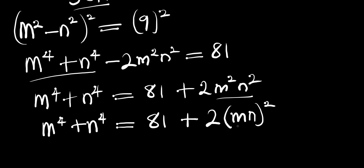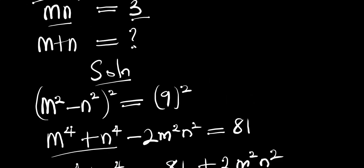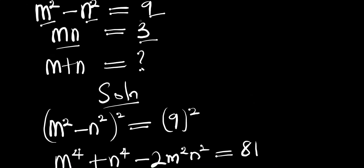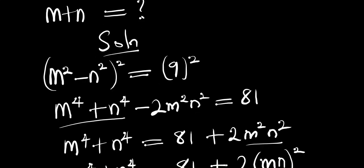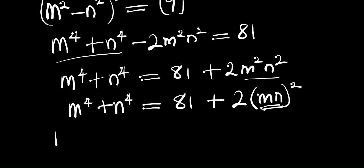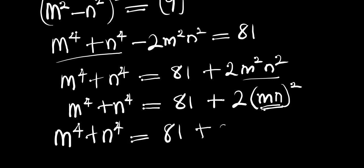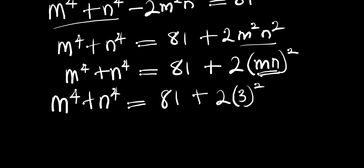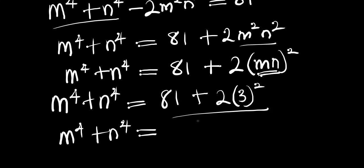From this point, we have mn, and from the original equation we were given mn equals 3. Substituting that in, we get m⁴ plus n⁴ equals 81 plus 2 times 3², which evaluates to 99.